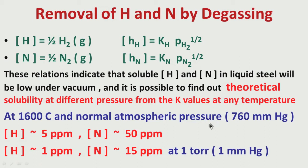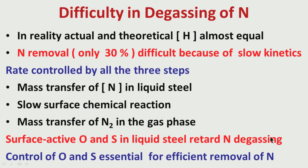It can be shown that at about 1600°C and at normal atmospheric pressure, the hydrogen and nitrogen limits are about 5 ppm and 50 ppm respectively. But at about 1 millimeter mercury — which is called 1 torr — it can be calculated from these relationships that hydrogen can be brought down to 1 ppm. Nitrogen can theoretically be brought down to 15 ppm. But there is a difficulty in degassing of nitrogen.